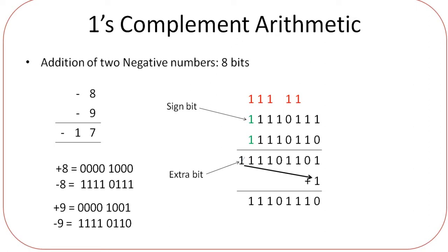Now suppose the question says use 8-bit numbers. The result will be the same, but you use 8-digit numbers. For example, minus 8 and minus 9, which gives minus 17. First write the binary value for 8 and convert to one's complement by inverting, giving 11110111. For 9, the binary is 00001001; add zeros in front and convert to one's complement by inverting, giving 11110110. Write both 8-digit numbers down.